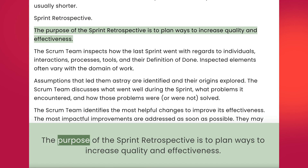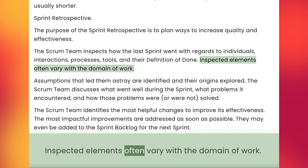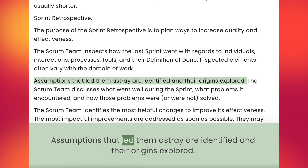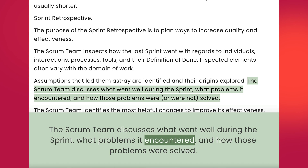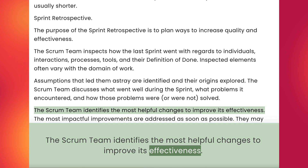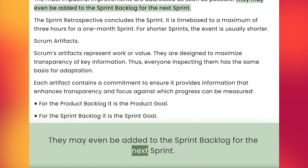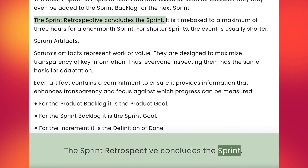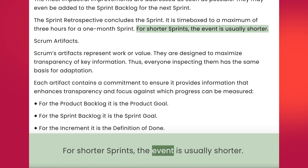Sprint Retrospective. The purpose of the sprint retrospective is to plan ways to increase quality and effectiveness. The Scrum team inspects how the last sprint went with regards to individuals, interactions, processes, tools, and their definition of done. Inspected elements often vary with the domain of work. Assumptions that led them astray are identified and their origins explored. The Scrum team discusses what went well during the sprint, what problems it encountered, and how those problems were solved. The Scrum team identifies the most helpful changes to improve its effectiveness. The most impactful improvements are addressed as soon as possible and may even be added to the sprint backlog for the next sprint. The sprint retrospective concludes the sprint and is time-boxed to a maximum of three hours for a one-month sprint. For shorter sprints, the event is usually shorter.